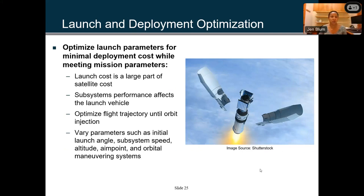An additional space example is launch and deployment optimization. We need to get satellites into space, so you want to optimize the launch parameters while minimizing cost and meeting mission parameters — cost is huge, so we want to minimize that. Different subsystems' performance affects the launch vehicle. Parameters to look at include the flight trajectory, and you can vary things like initial launch angle, aim point, altitude, speed, and so on to find the optimal trajectory.